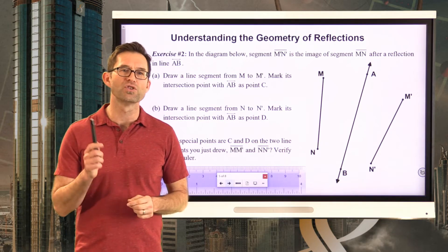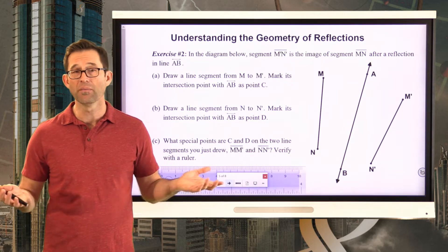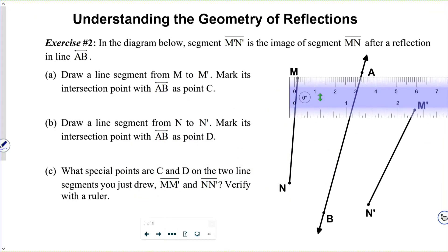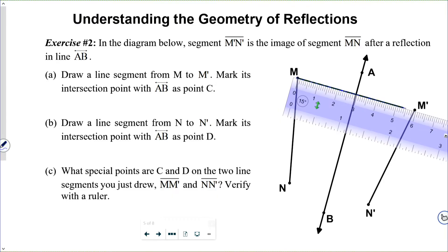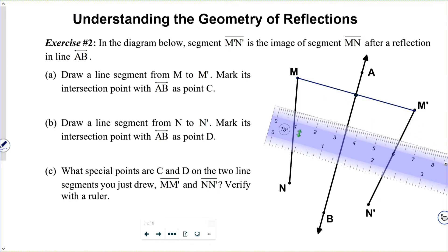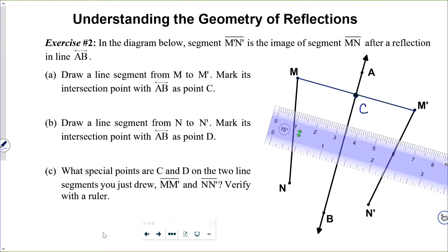Let's understand a little more about the geometry of reflections. Exercise number two: in the diagram below, segment M'N' is the image of segment MN after a reflection in line AB. Letter A asks us to draw a line segment from M to M', marking its intersection point with AB as point C.